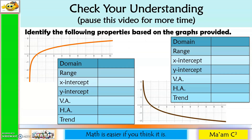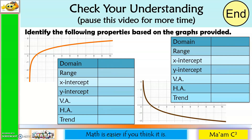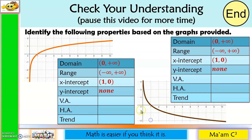Now it is time to check your understanding. Pause this video for more time. Let us answer: domain is (0, +∞), 0 not included; range is (−∞, +∞); x-intercept is (1, 0); no y-intercept because the y-axis serves as the vertical asymptote, x = 0; no horizontal asymptote; and the trend — this one is increasing and this one is decreasing.